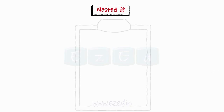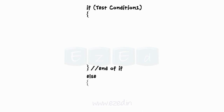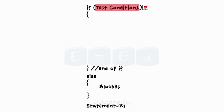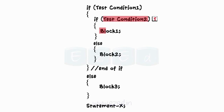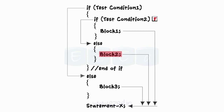The next topic is nesting of if-else. When an if statement is written under another if statement, this structure is called nested if. When a series of decisions are involved, we may use more than one if-else in nested form. If condition 1 is false, block 3 is executed; otherwise it moves to the second test. If condition 2 is true, block 1 is executed; otherwise block 2 is executed and control transfers to statement X.